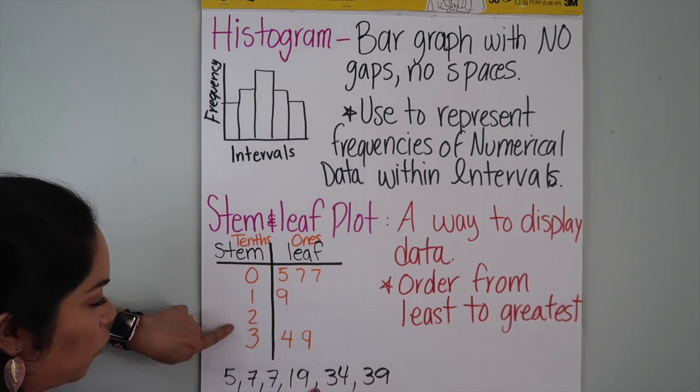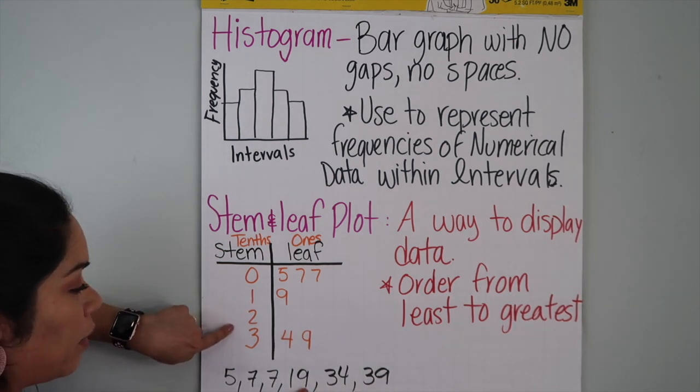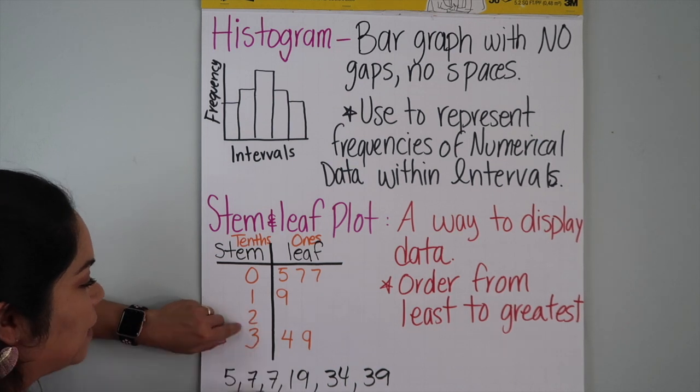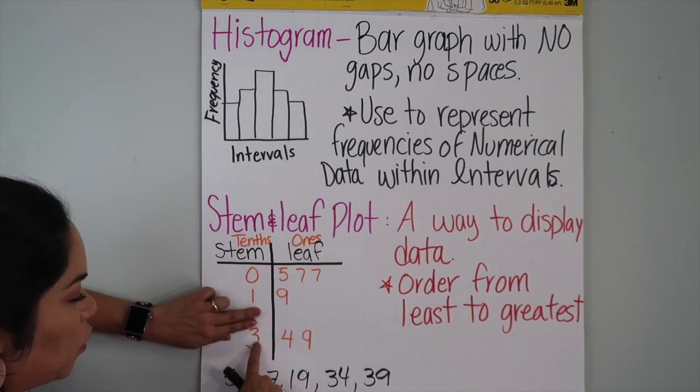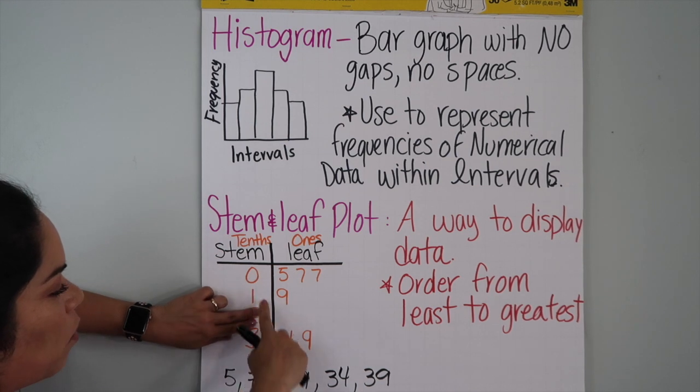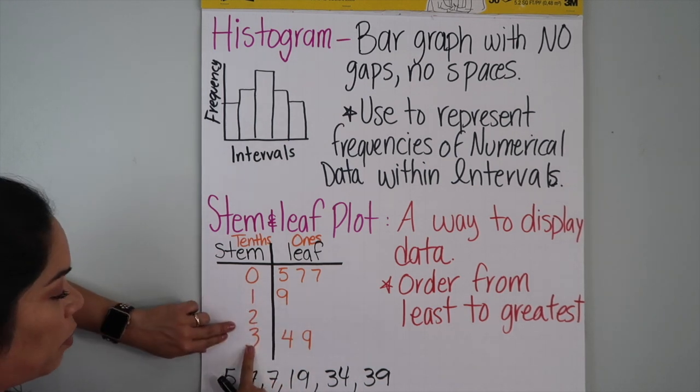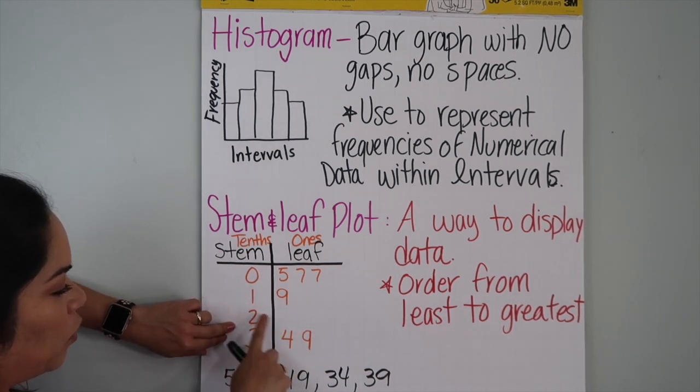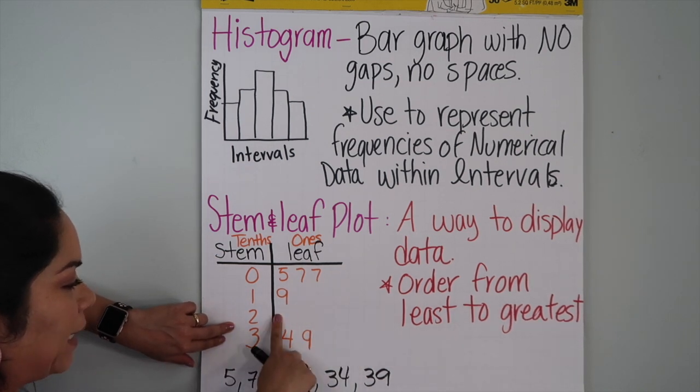If you have anything here for twenties, any number, you cannot skip it. You have to go in order, so you cannot skip and write zero, one, three. You have to write the two, but you don't have anything, so you just leave a blank.